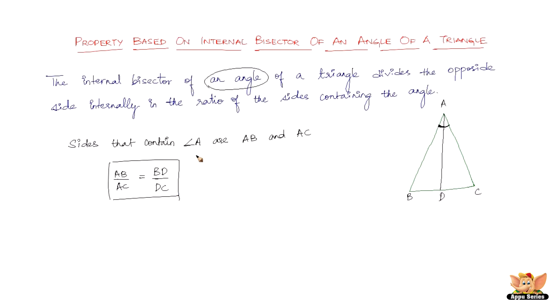That is what this property is all about. This is one of the most important properties as far as basic proportionality is concerned — for triangles, to solve any kind of problem or to prove something, these results are going to help us greatly. If you remember these results, we can reduce a lot of steps in solving a problem, so try to get familiar with this.